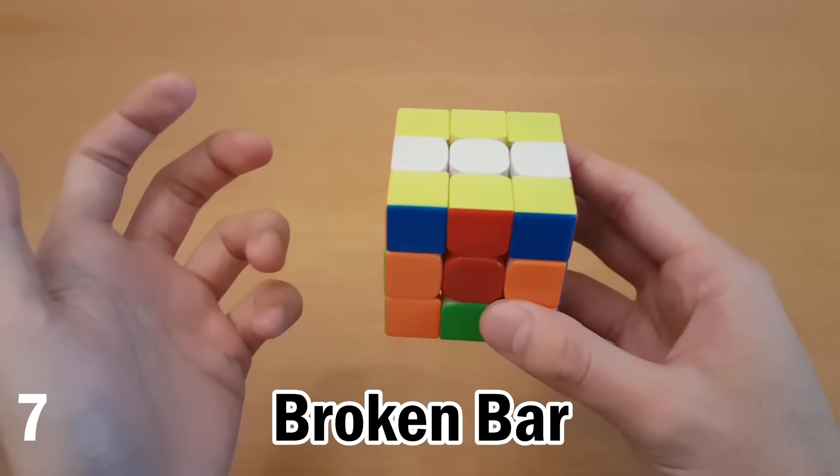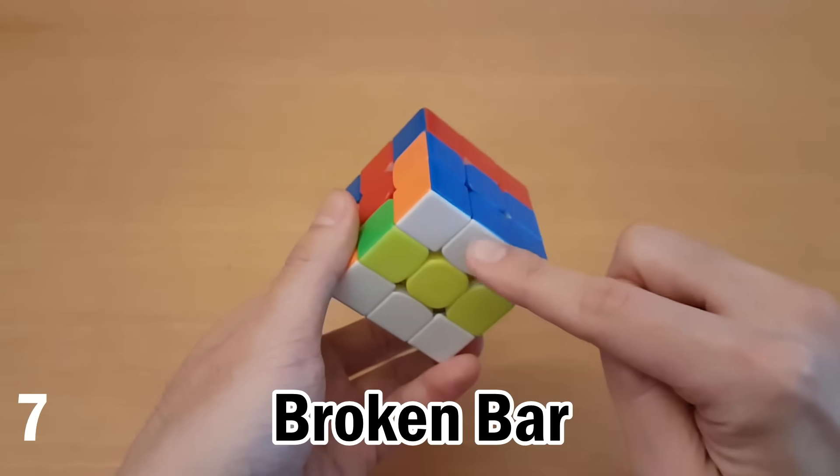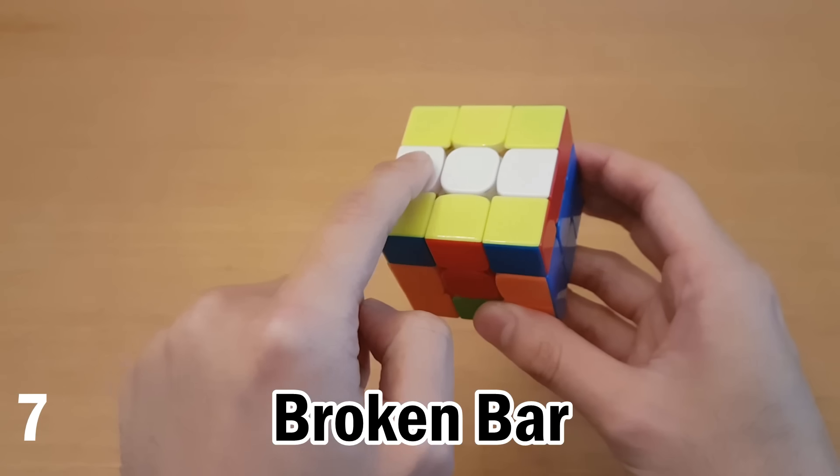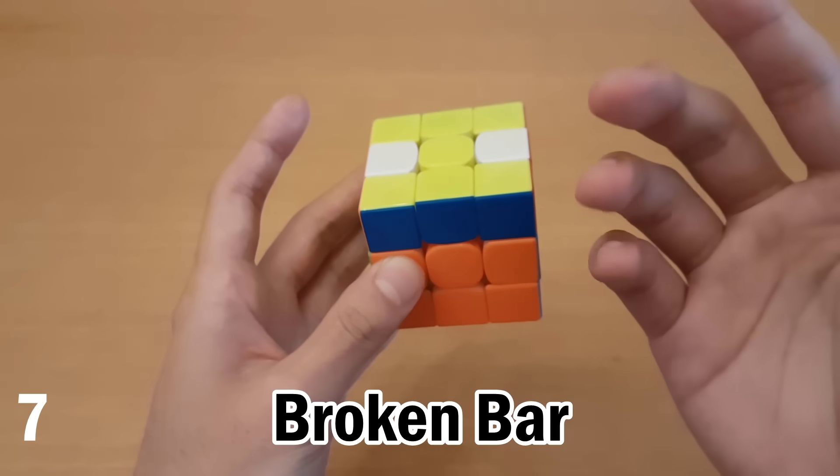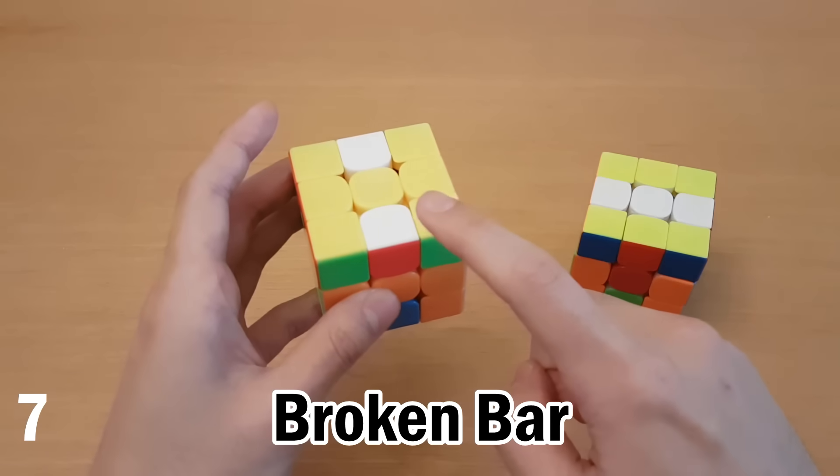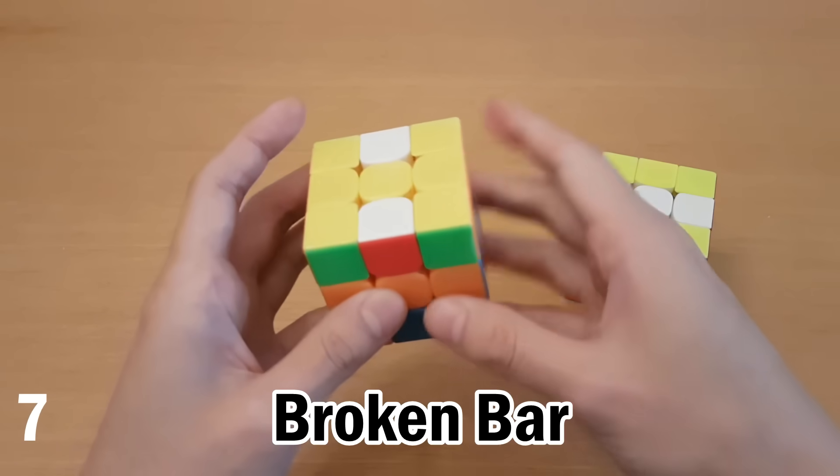In our next category of cases, this is the broken bar case. So in this case, our bottom color is white. We notice that there's a white bar here, but as we do M2, it's going to break that bar. This is actually the same case, even though it doesn't look like it. Because here, when you do M2, you can see that the white will definitely not make a bar.